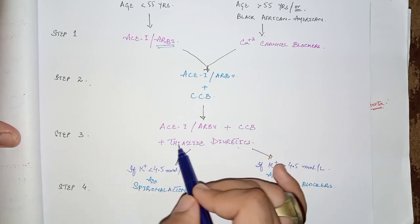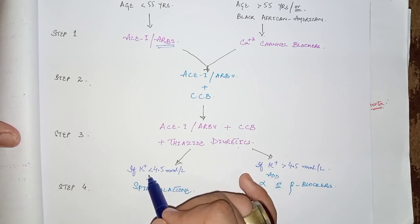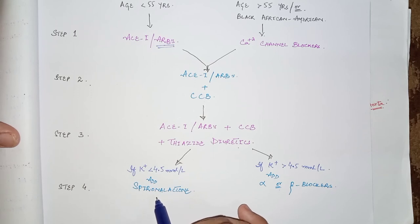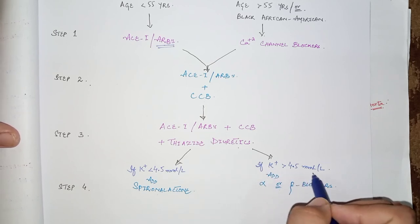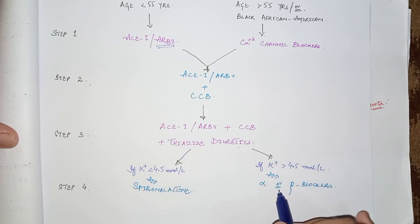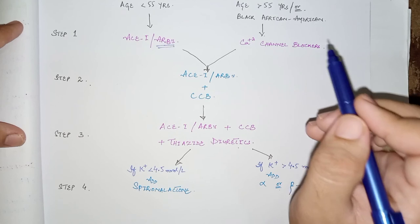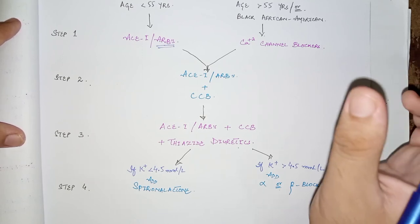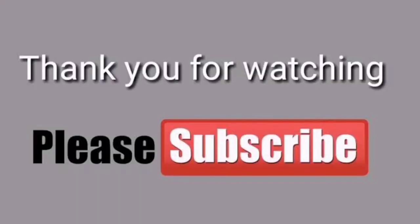If the patient is resistant to all three drugs — refractory hypertension — check the potassium level. If potassium is less than 4.5 mmol/L, add spironolactone, as it is potassium-sparing and will not reduce potassium levels. If potassium is more than 4.5 mmol/L, add either alpha blockers or beta blockers. Always ask about risk factors and comorbidities like diabetes mellitus, angina, and MI, as these change the prescription. This concludes the management of hypertension.